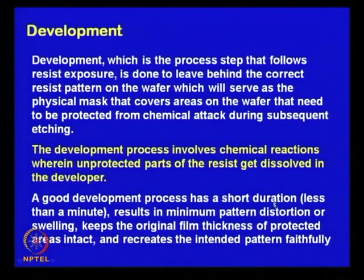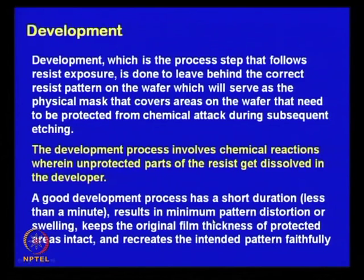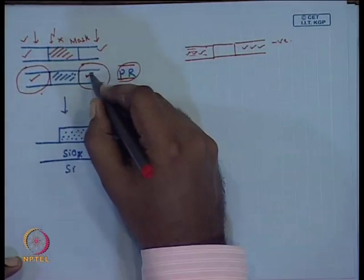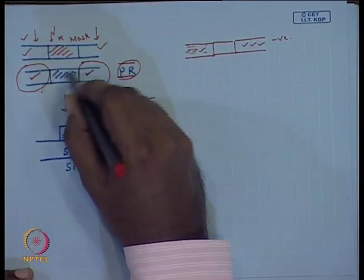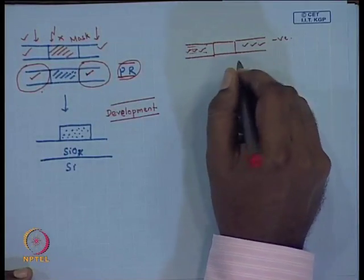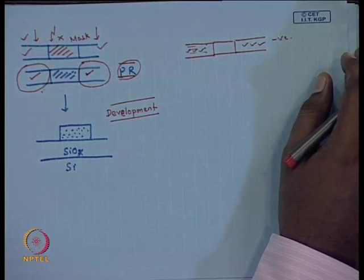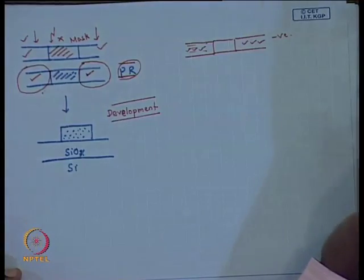The development process involves a chemical reaction where unprotected parts of the resist get dissolved. A good development process has a short duration — less than a minute typically — results in minimum pattern distortion or swelling, keeps the original film thickness of protected areas intact, and recreates the intended pattern faithfully. Short duration is very critical because a longer duration will cause even the parts you do not want to dissolve to start dissolving, since the solvent is a solvent for the entire material.